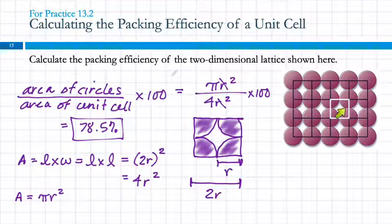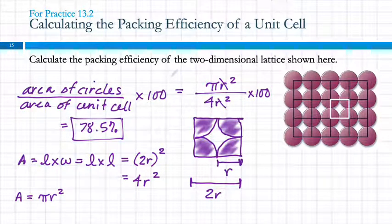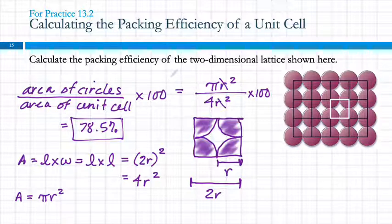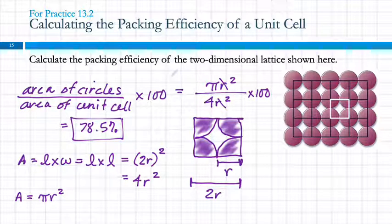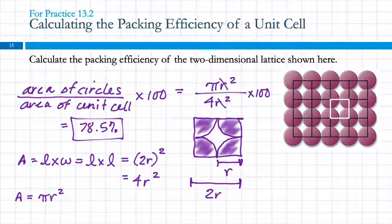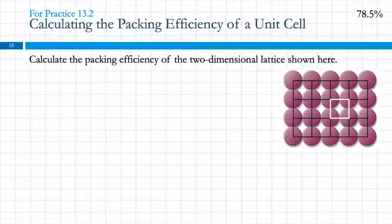So in the unit cell, 78.5% of the area is covered by the atoms, and the remaining roughly 21.5% is empty space. That's what we're talking about with packing efficiency, except in three dimensions.